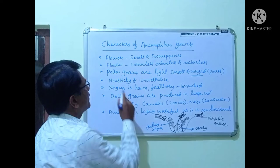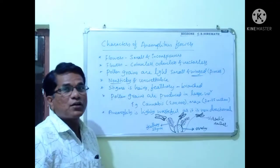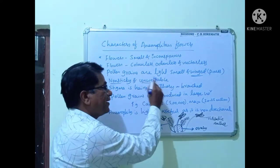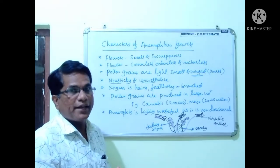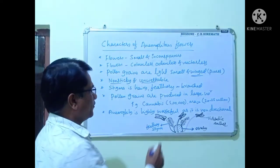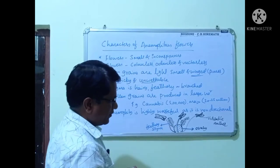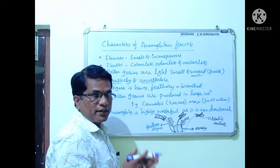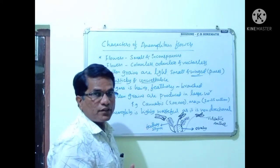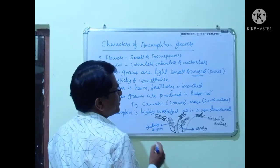These pollen grains are non-sticky and unwettable, and stigma is hairy and feathery. So it is shown in the diagram. You can see the diagram - it is a flower of a grass which shows feathery stigma and versatile anthers.